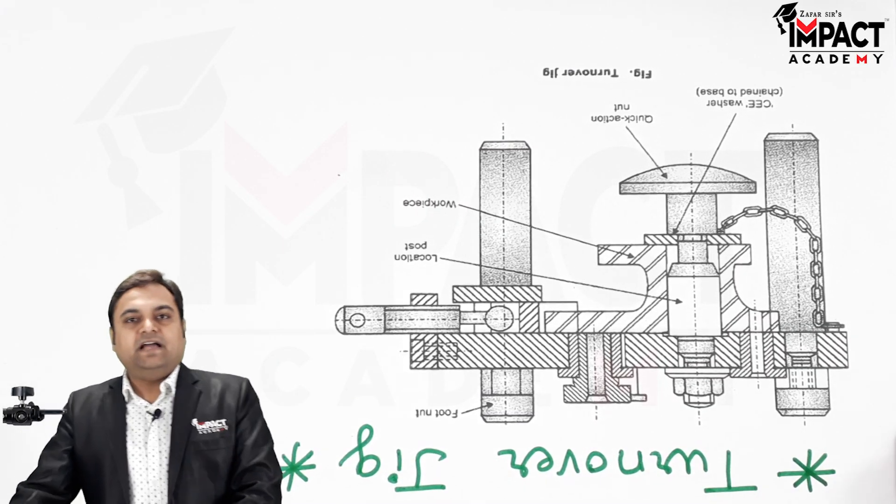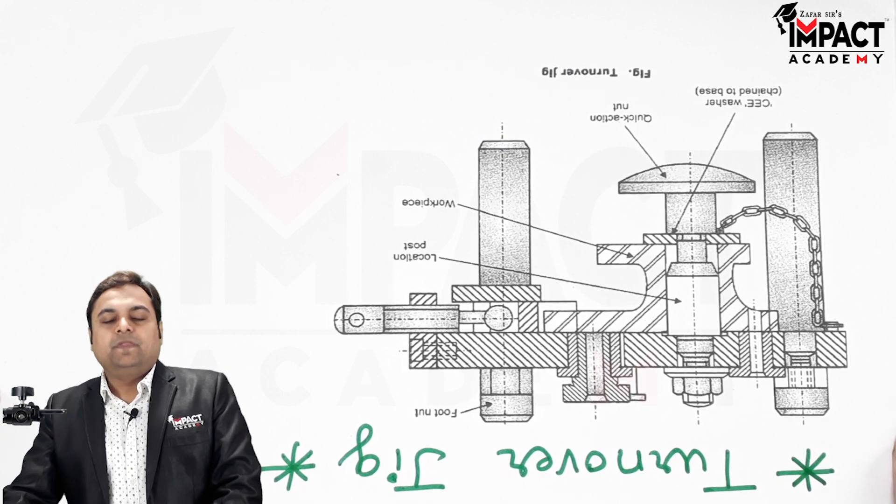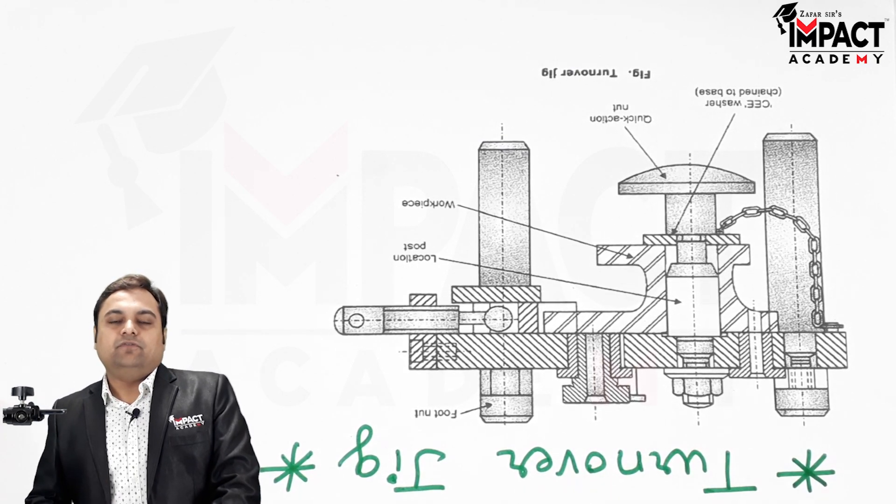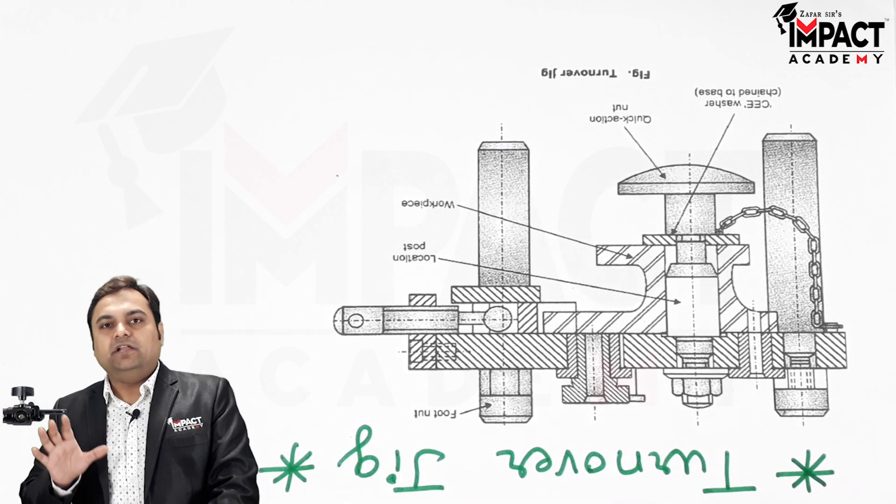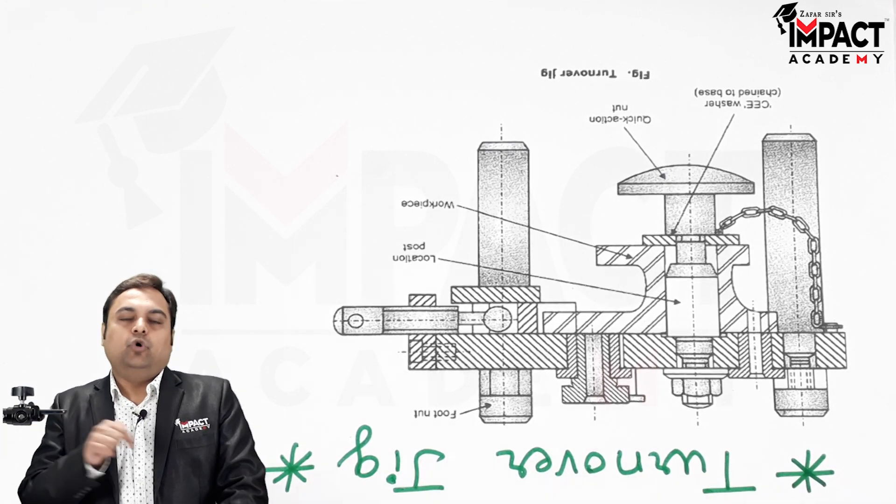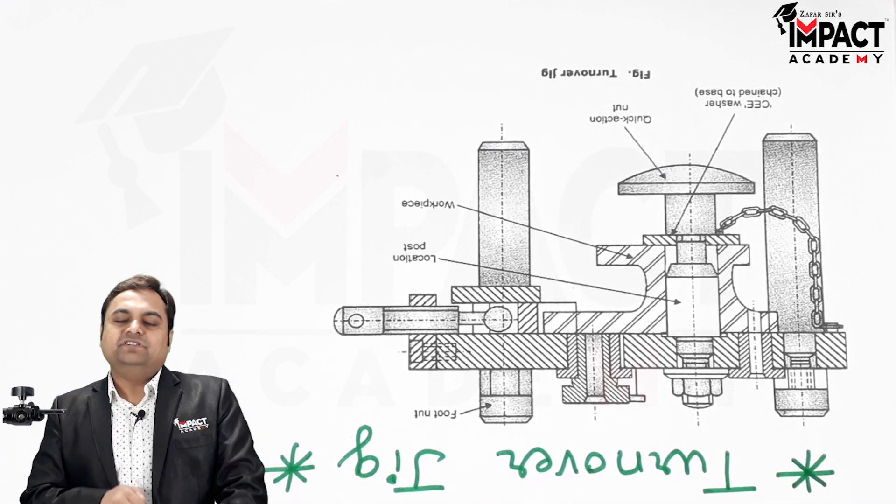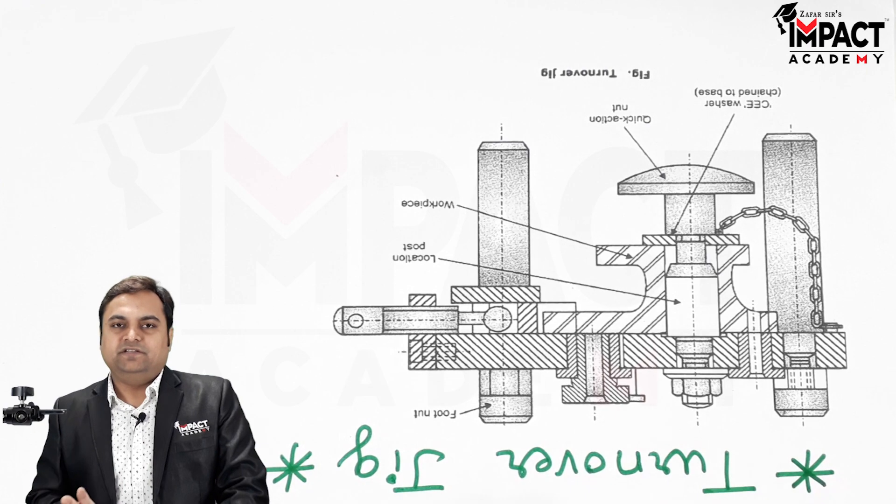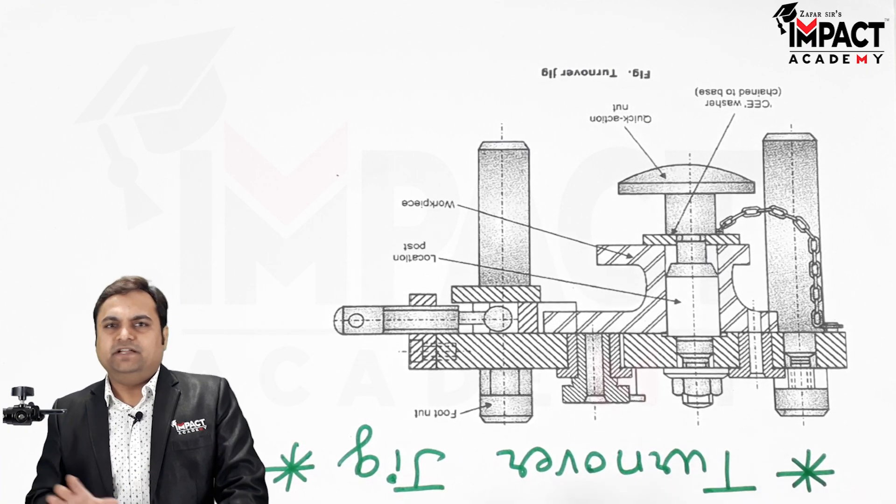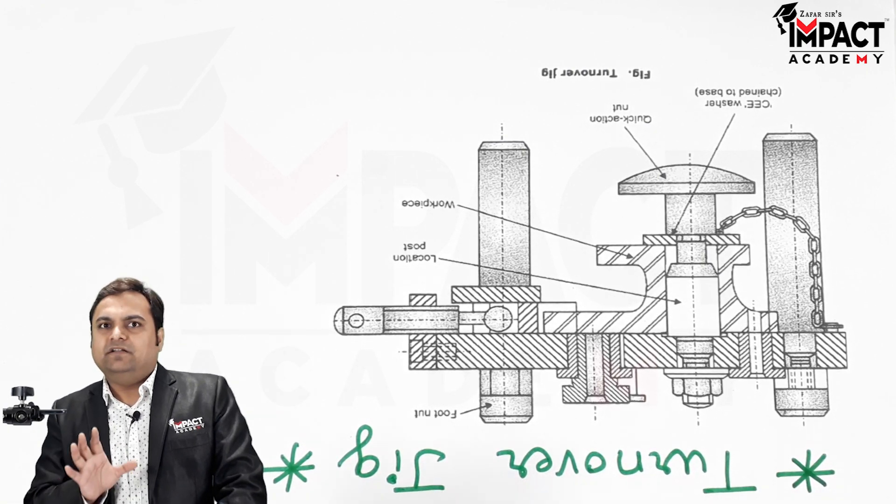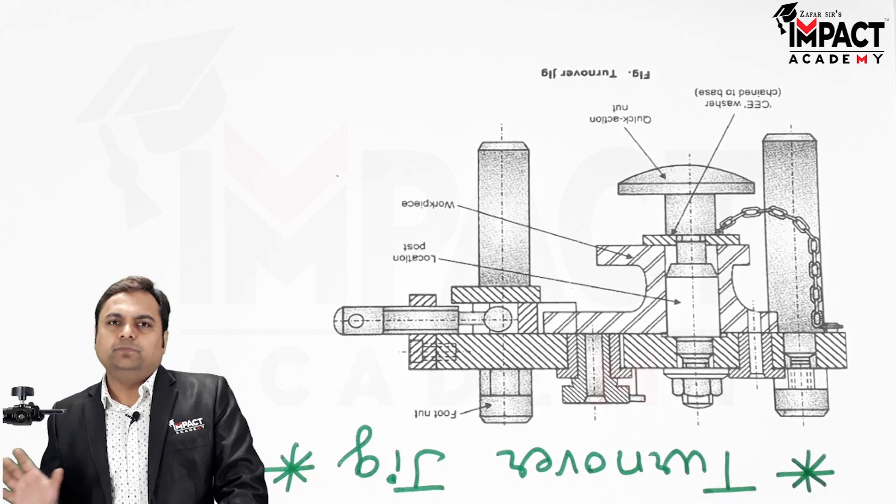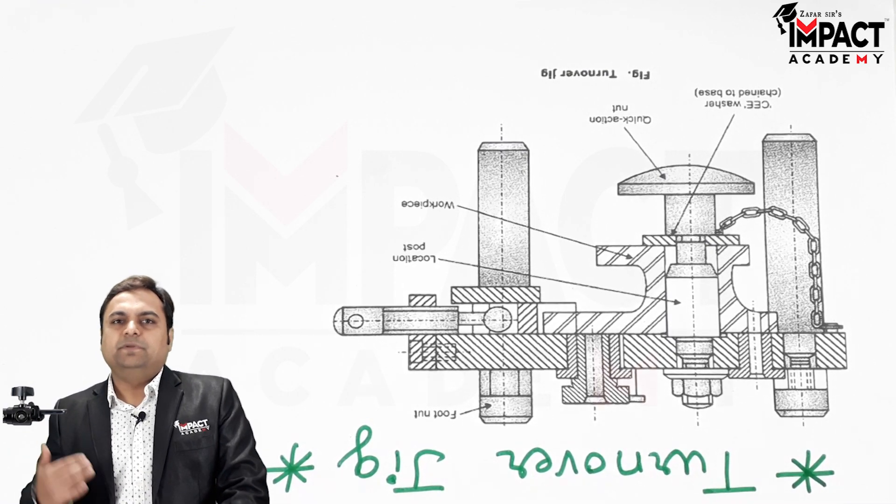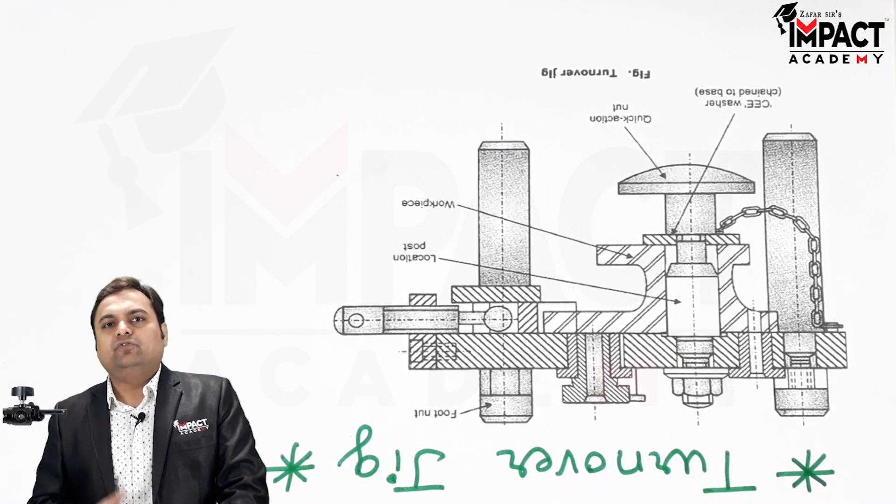Now here we have the diagram of the turnover jig. It is basically used for those components in which we have to drill holes and those components are not symmetric. That is, the shape of the component is complicated and in that, the holes cannot be drilled by using a simple jig plate. So we have to use the turnover jig.